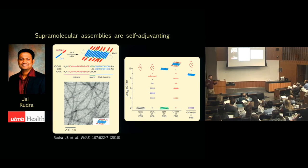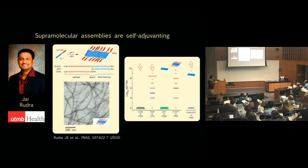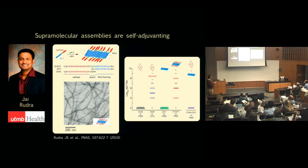Q11 in PBS showed no immune response at all — the antibody titers were just nothing. So Jay very cleverly put a peptide that has both a B-cell and a T-cell epitope, attached it to Q11, and looked at what happened. What he saw was not just that it raised a response, but a very strong antibody response. These are antibody titers in mice.